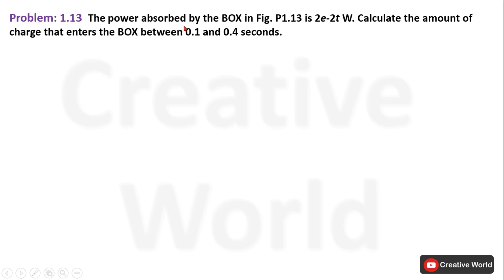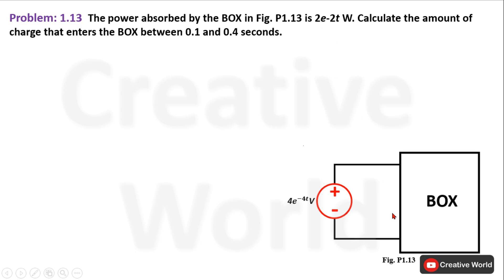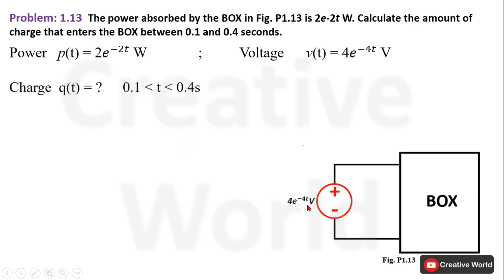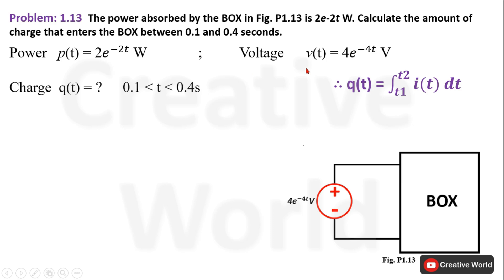Problem 1.13: the power absorbed by the box in figure p1.13 is p(t) = 2e^(-2t) watt. Calculate the amount of charge that enters the box between 0.1 and 0.4 seconds. Power is given in the scenario and voltage is given in the figure. We need to calculate the charge. The basic formula is q(t) = integral of current from t1 to t2. Since we don't have current, we will first calculate it because power and voltage are both given, using p = v × i.